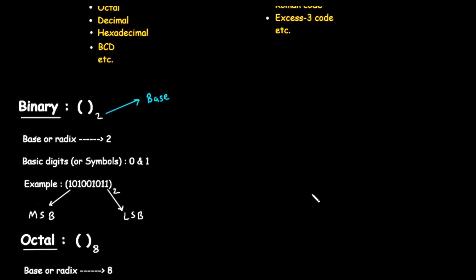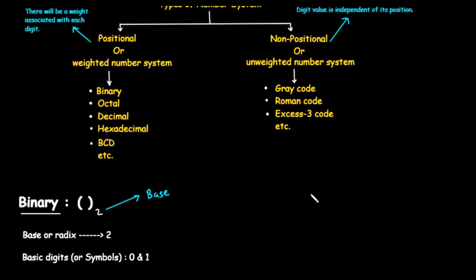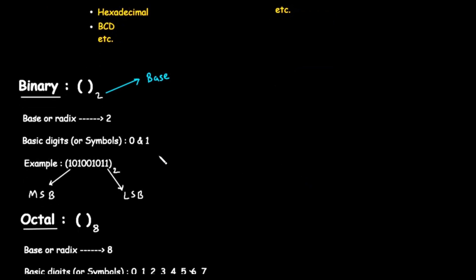For the rest of our discussion, we will focus on the four most important positional number systems. Let's start with the foundation of all modern computing, the binary number system. The notation for a binary number is a number inside parentheses with a small subscript 2 at the end.